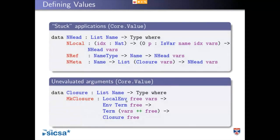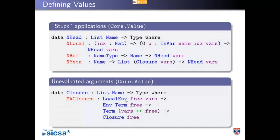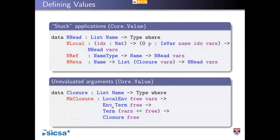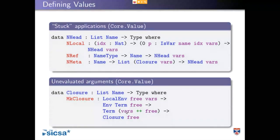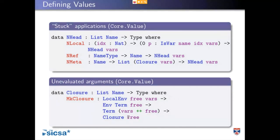We can resume evaluating this thunk by recording the local variables — in full Idris, things you've got under let binders, or values if you're applying a lambda to an argument. The free variables are the current environment under which you're normalizing. We have the term, which includes the free variables we started with and the binder we've gone under, as a closure in that environment. Looking at the indices, it's explicit what the environment we started in was and what it's become.